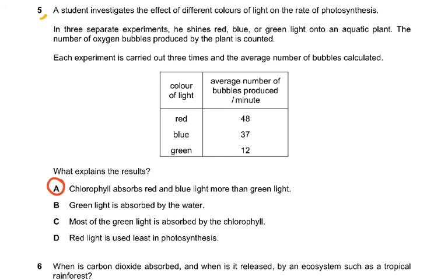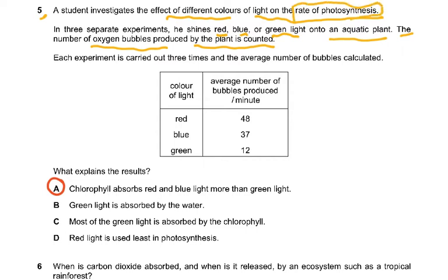Question 5: a student investigates the effect of different colors of light on the rate of photosynthesis, shining red, blue, or green light onto an aquatic plant and counting oxygen bubbles produced. Each experiment is carried out three times and the average is taken. Repeating experiments increases the reliability of the results.